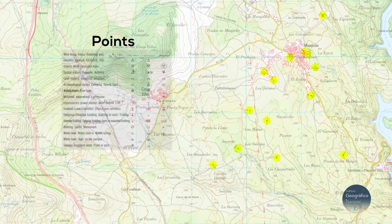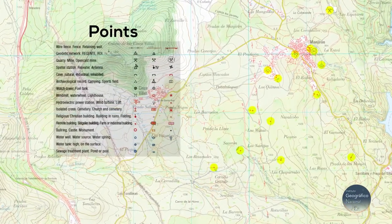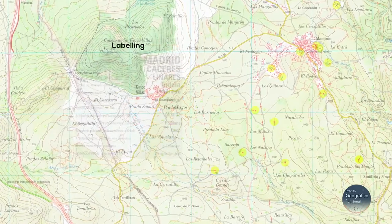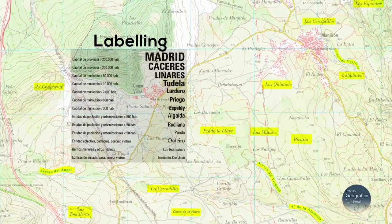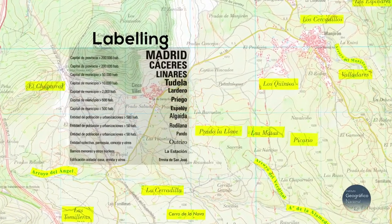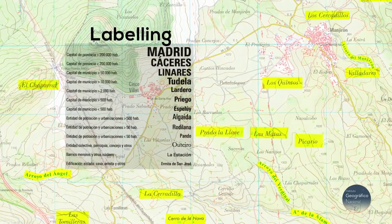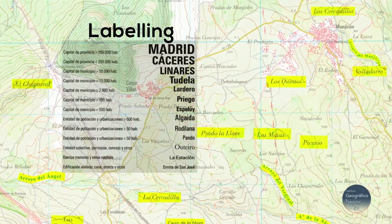Objects are shown as points when their dimensions to scale are equivalent to a point. Labelling covers all geographical names included on the map, represented in a font and colour closely related to what they name.